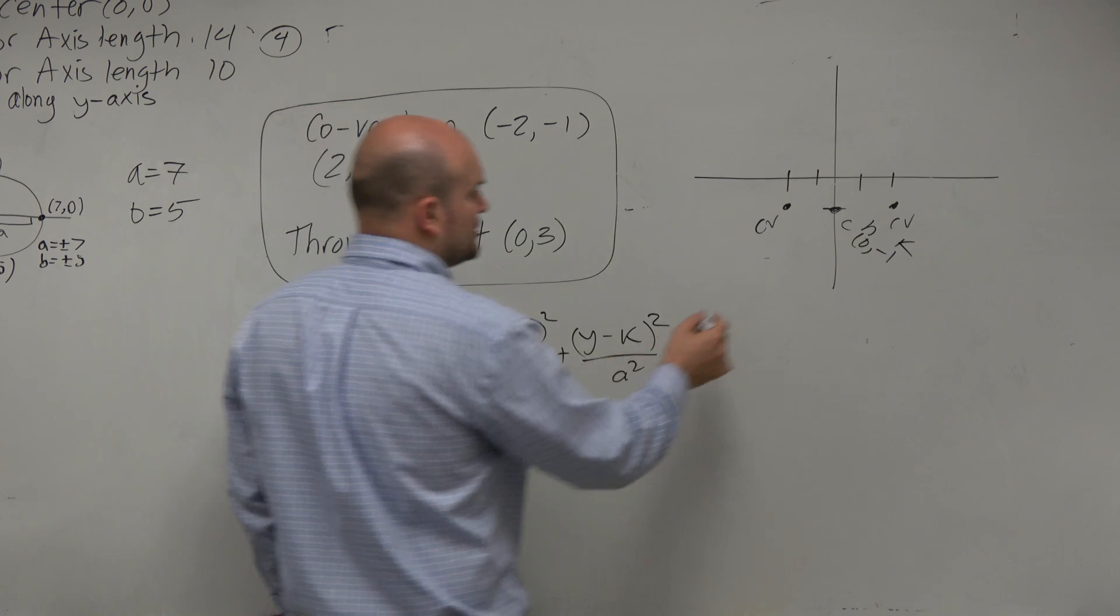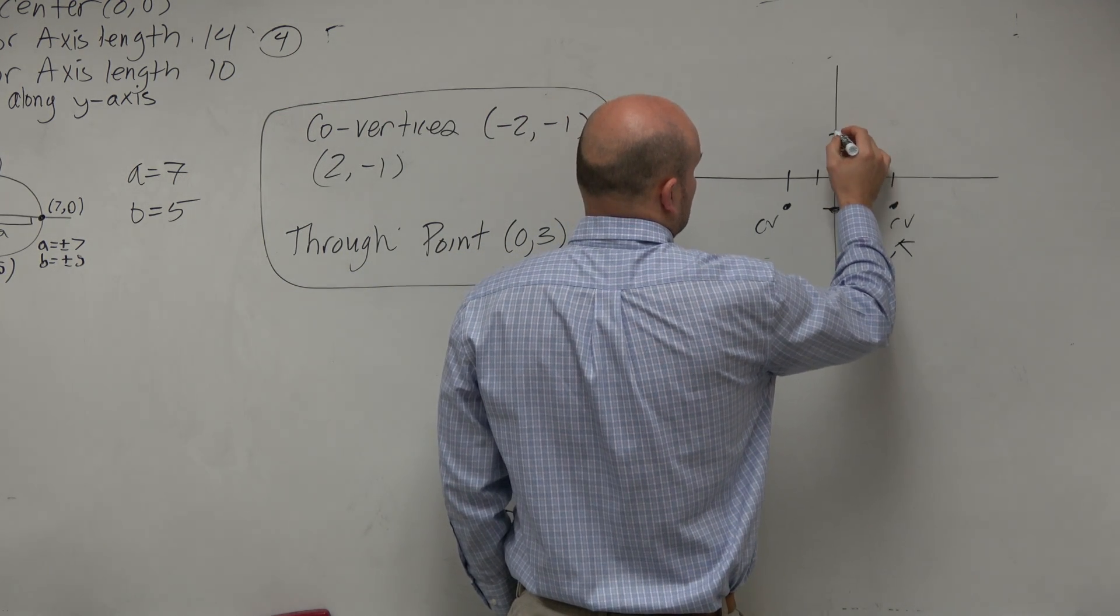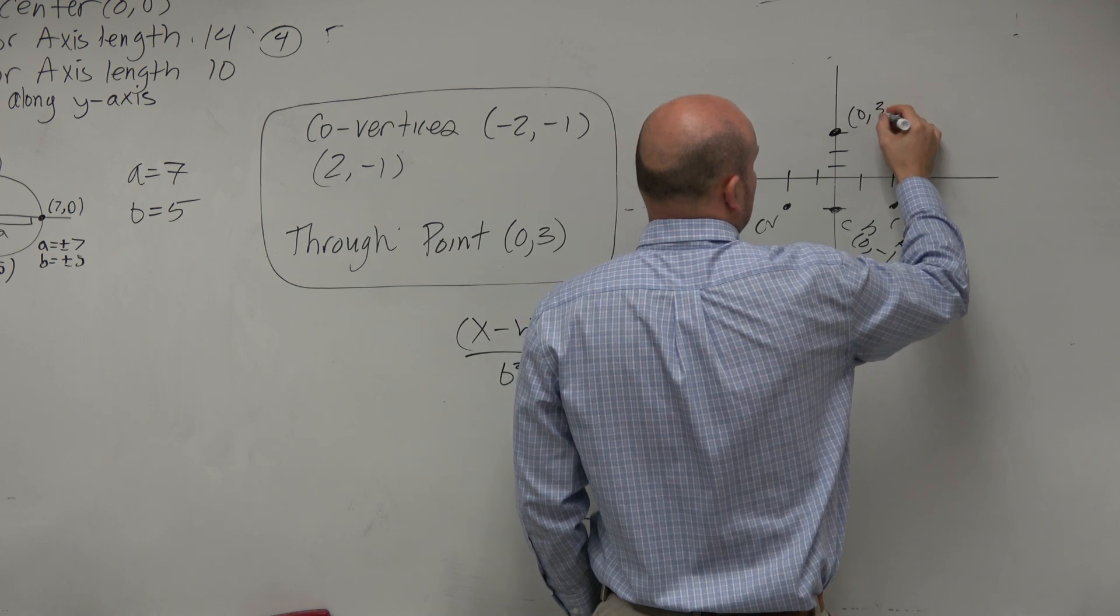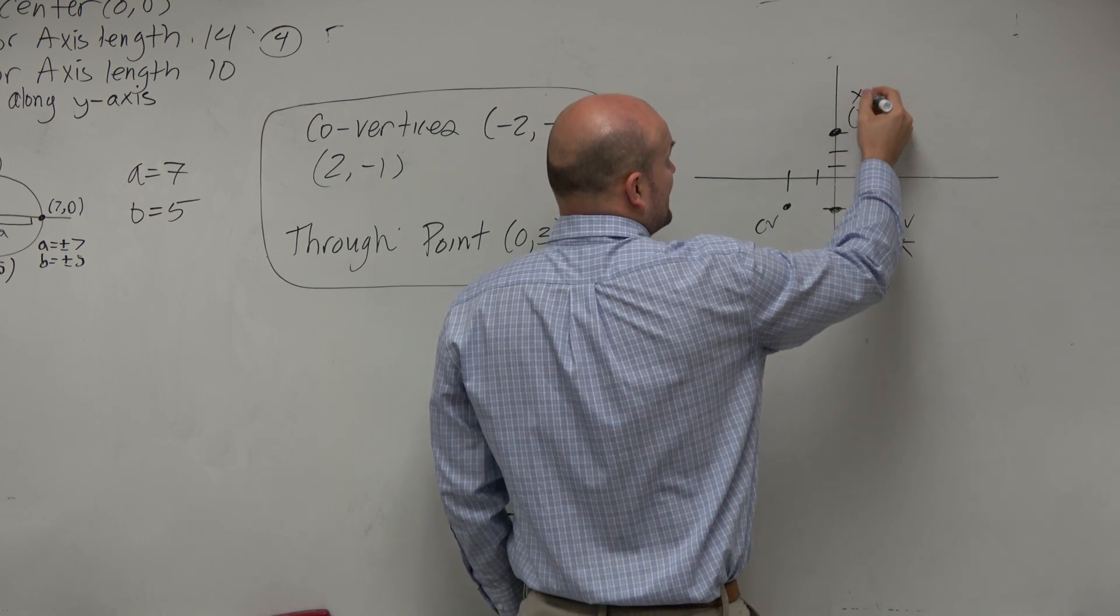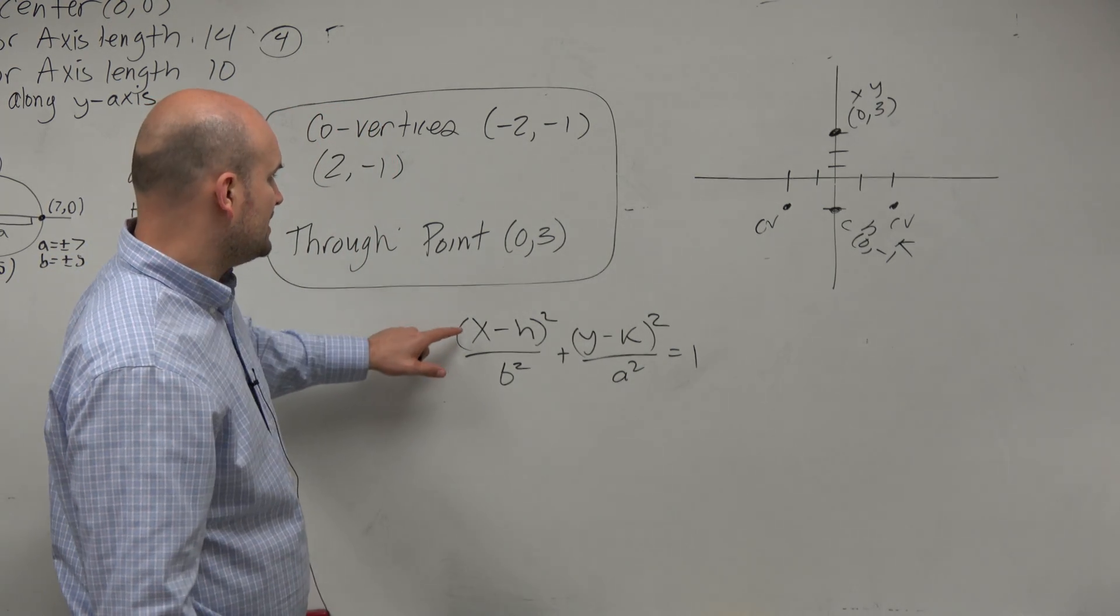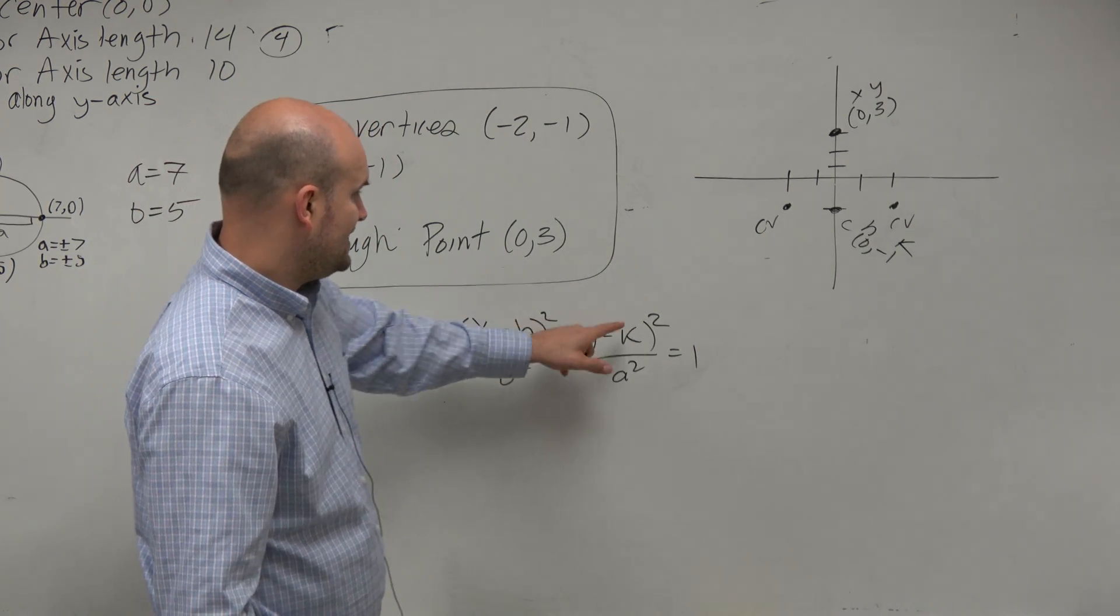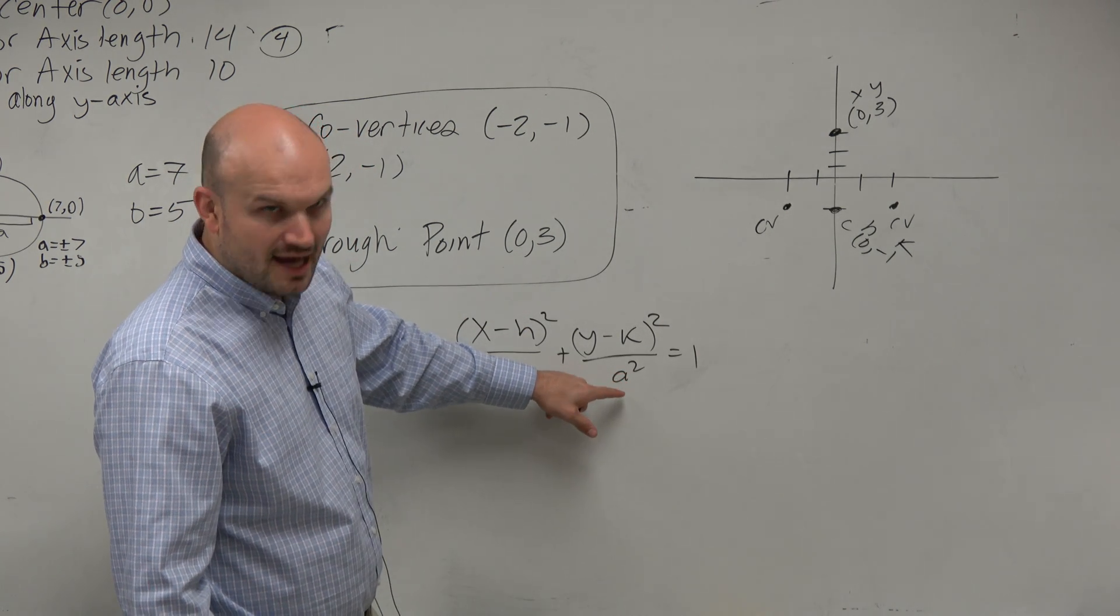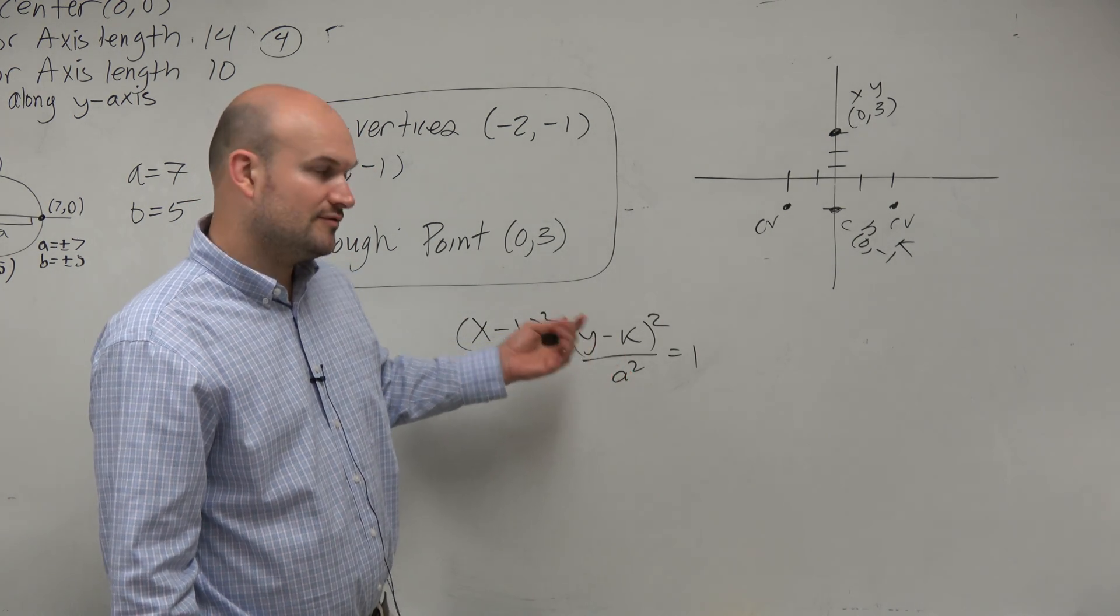And then there's also, it has to go through the point 0, 3. Well, that 0, 3 could represent the x and the y of any point that lies on the ellipse. So now I can plug in x, y, h, k, and b. And the only thing I don't know is a. But could I solve for a? Of course I could.